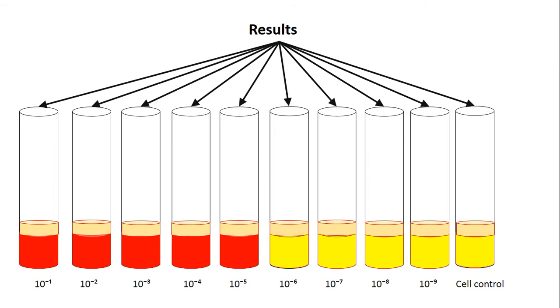By this reaction, we can detect the maximum dilution of virus, the titration of virus, which can block the metabolic processes. In this example, we can see this is 10^-5, because we cannot detect the change of color in the media.